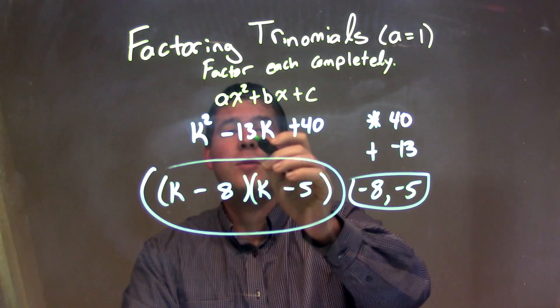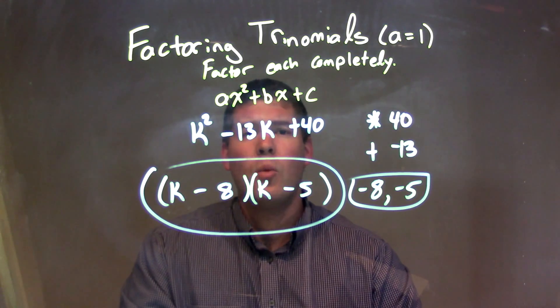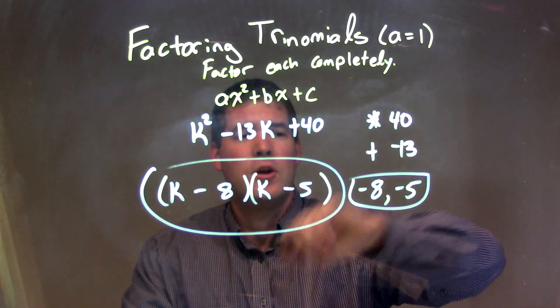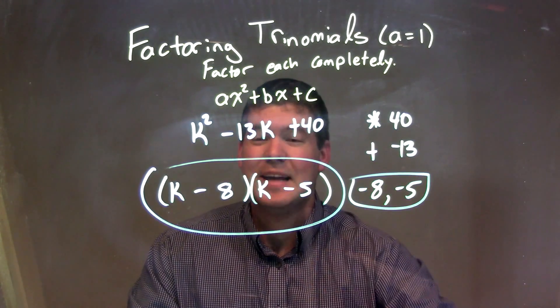So as a recap, we're given k squared minus 13k plus 40. And we have to ask ourselves the question, what two numbers multiply to be that 40 but add to be a negative 13? Our numbers we found were negative 8 and negative 5.